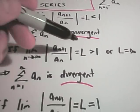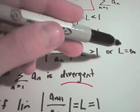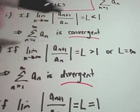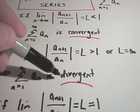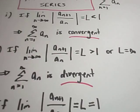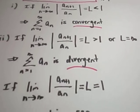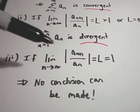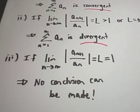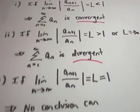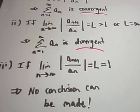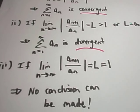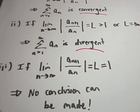If this ratio ends up being something bigger than 1 or infinity, then we can claim that this series is divergent. The last case is, if this limit equals 1, you can't make any conclusion at all — you would have to figure out a different way to do it. So it's not foolproof, but it does work most of the time.